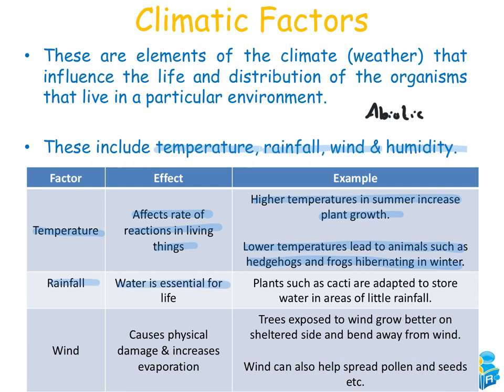Rainfall is essential for life — plants such as cacti are adapted to store as much water as possible, as they are found in desert ecosystems where low rainfall is very common. Wind can cause physical damage and increases evaporation and transpiration in plants. Trees exposed to wind grow better on the sheltered side and bend away from the wind. Wind also helps spread pollen and seeds, allowing plants to grow in new places.